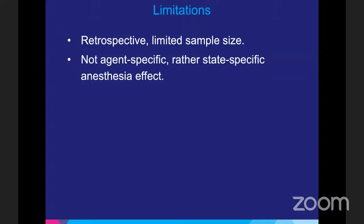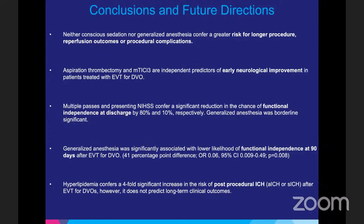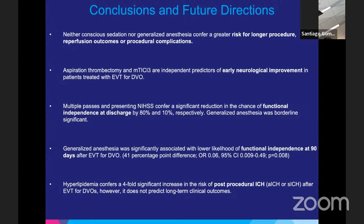As for limitations: this is retrospective, with a limited sample size of 70 patients, and it is a state-specific rather than agent-specific anesthesia study. In conclusion, neither conscious sedation nor general anesthesia confers greater risk for longer procedures, reperfusion outcomes, or procedural complications. Aspiration thrombectomy and mTICI 3 predict early neurological improvement. Multiple passes and presenting NIHSS significantly reduce functional independence at discharge. General anesthesia was associated with lower likelihood of functional independence at 90 days, and hyperlipidemia conferred a fourfold increased risk for post-procedural ICH.